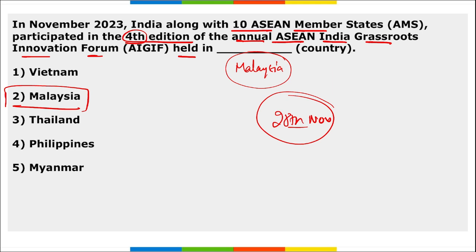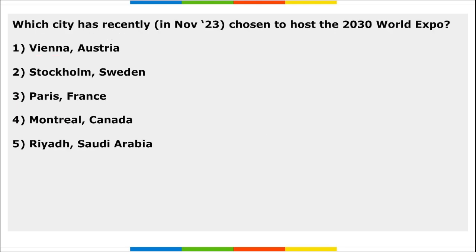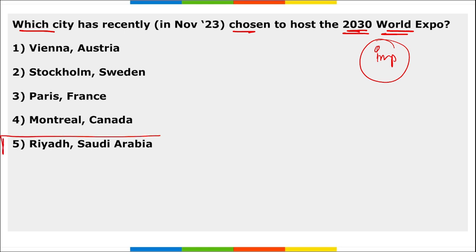Next: which city has been chosen to host the 2030 World Expo? It is Riyadh, Saudi Arabia. Saudi Arabia's capital is Riyadh, and they will be hosting the 2030 World Expo. Mark this as important.